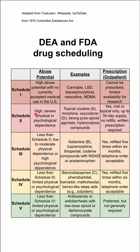Schedule 2 are drugs that have high abuse potential with severe physical or psychological dependence. This includes cocaine, topical cocaine, morphine, oxycodone, strong pure opioid agonists, and hydrocodone compounds. These can be prescribed up to a 30-day supply without refills. Oral or topical only — you cannot get IV versions of these medicines.